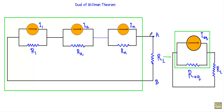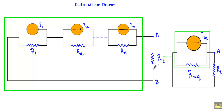That means if I have a circuit with I1 in parallel with R1, I2 in parallel with R2, and In in parallel with Rn, and these parallel combinations are connected in series, we can replace this entire network with a single current source I equivalent in parallel with a single resistance R equivalent, with respect to terminals A and B.